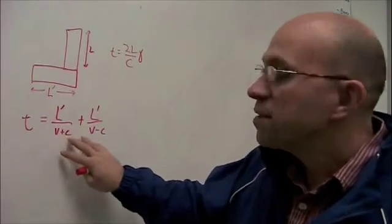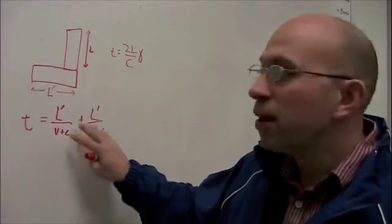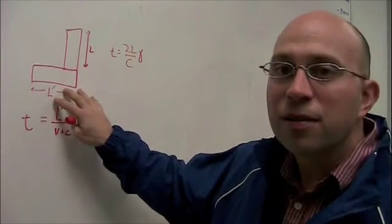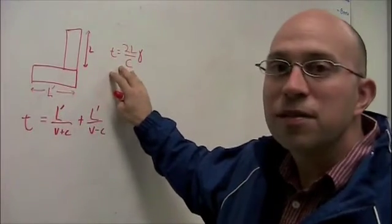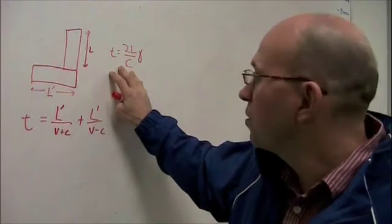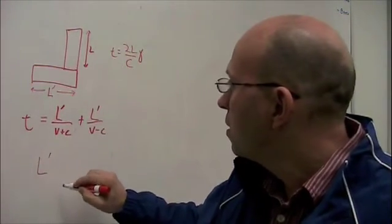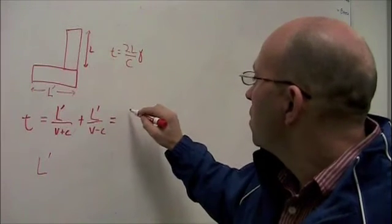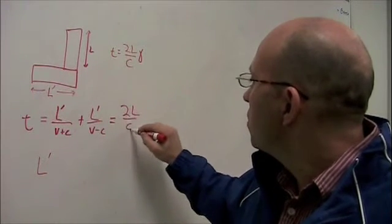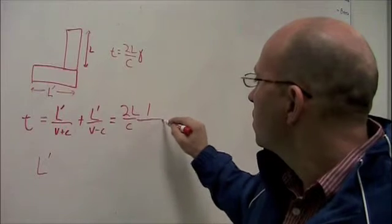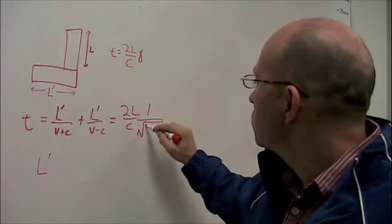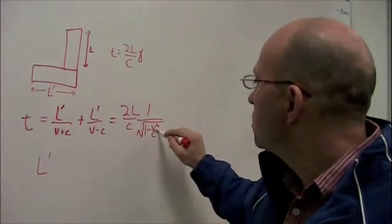Alright, so this is the time required for a round-trip tick of the horizontal clock. We've already argued that it's equal to the time required for a round-trip tick of the vertical clock. So we're going to set these two things equal. So we get, well I'll just write it here. We have that's equal to 2L over C times gamma. Gamma is equal to 1 over square root of 1 minus V squared over C squared.